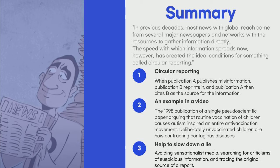There are three main categories of the video. First, circular reporting — it means when publication A publishes misinformation, publication B reprints it, and publication A then finds B as the source for the information.